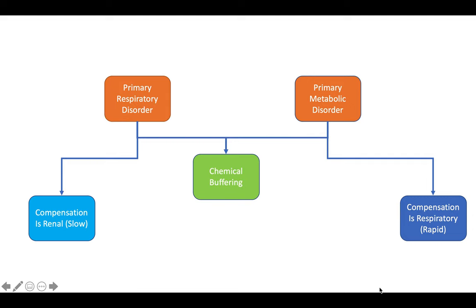For a primary respiratory disorder, compensation is renal, because the respiratory system cannot compensate for its own disorders. Renal compensation is a bit slow and can take almost two to five days. For primary metabolic disorders, compensation is rapid and occurs because of the respiratory system. If you become acidotic, the respiratory rate will go up and wash out CO2.